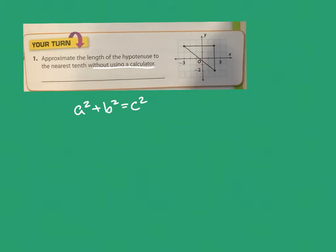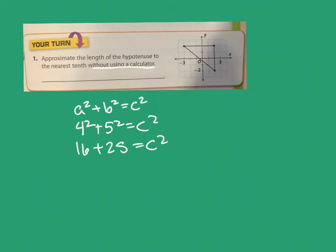We have one leg — the right angle is here, so this is a leg and this is a leg. One leg is 4 units and the other leg is 5 units. Squaring those gives us 16 and 25, for a total of 41.